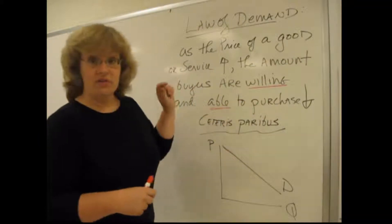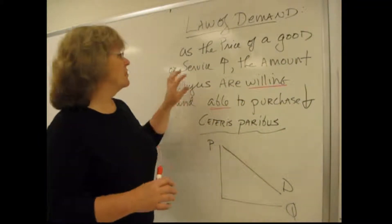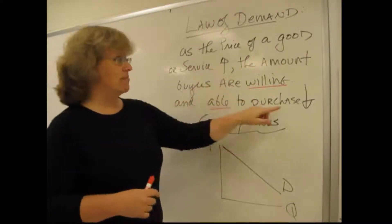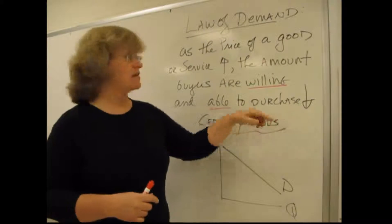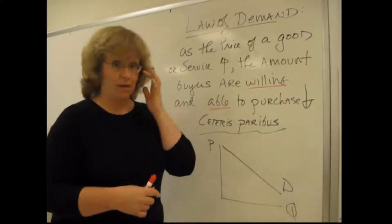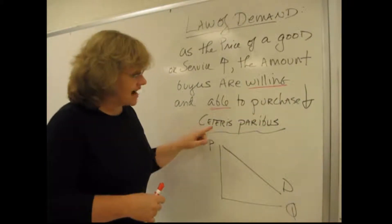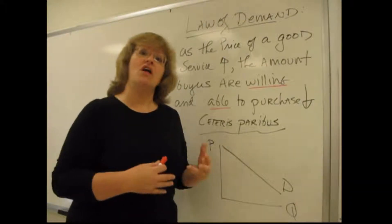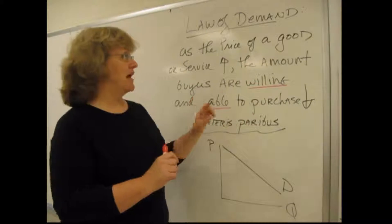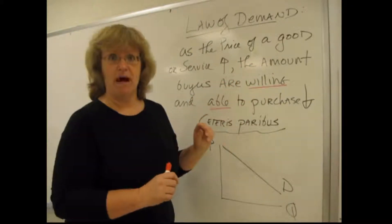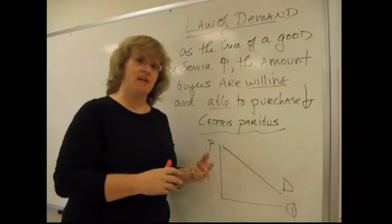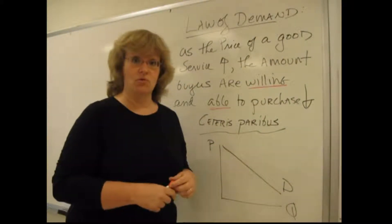These arrows go in the opposite direction, and that means that the relationship between price and the amount somebody wants to buy is inverse. As the price goes up, the amount that someone wants to buy falls, and vice versa — as the price falls, the amount that someone is likely to be willing and able to purchase will go up. Ceteris paribus is a Latin phrase that means all other things equal, or ignoring everything else that might affect the amount that someone is willing to buy. The Law of Demand talks only about the relationship between the price of a product — a good or a service — and the amount that someone wants to buy.